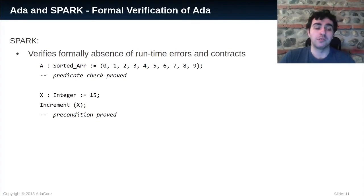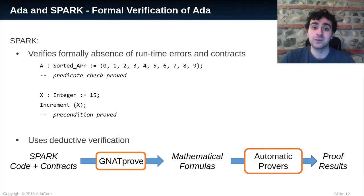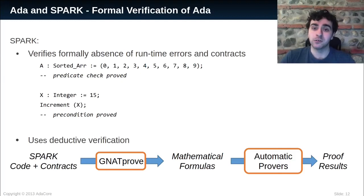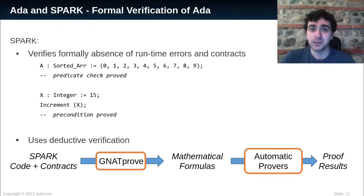When calling a subprogram with a precondition, such as increment, Spark will prove that the precondition holds with the given parameter. Spark is a static analyzer, which means that it will not run the program to analyze it. Spark proceeds with deductive verification. It takes the code annotated with contracts, which will be translated to mathematical formulas. Those formulas will be given to automatic provers, which will prove that the properties are valid or not. Spark analysis is sound, which means that it will not miss any error. However, it is not complete — when Spark cannot prove a check, it doesn't mean that the check will fail at runtime. Spark might just be missing information to prove it.